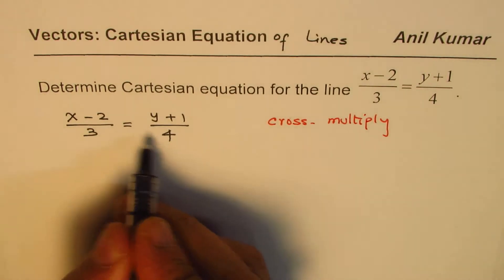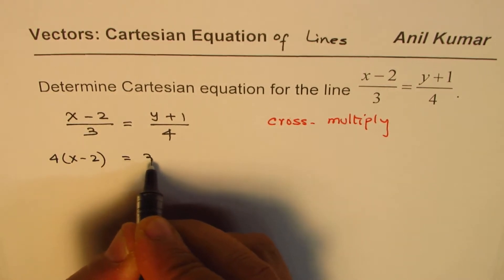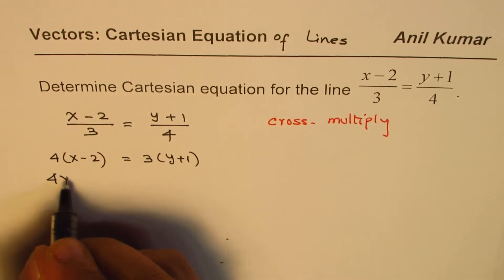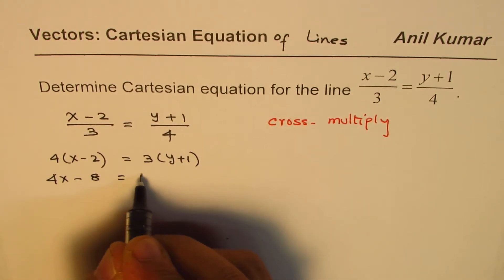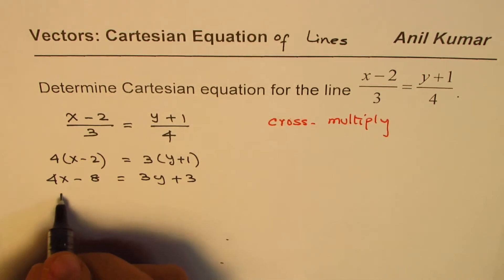So let's cross multiply and see what we get. 4 times (x-2) equals 3 times (y+1). Let's open the brackets: 4x - 8 = 3y + 3. Bring the terms together: 4x - 3y, we already have -8 - 3 = 0.